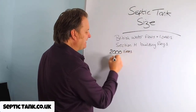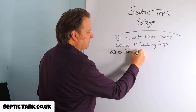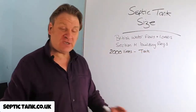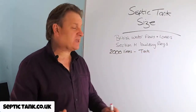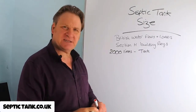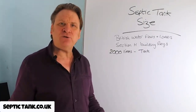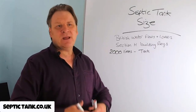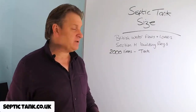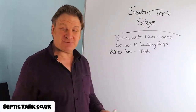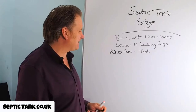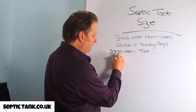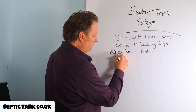Your tank has got to have a 2,000 litre capacity before you even start working out the size of your septic tank. Why? Because it's for dilution rate. There's a lot of ammonia and acids and cleaning products and other things that go into the waste water in a septic tank, so it needs to have a dilution.